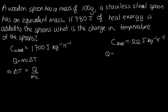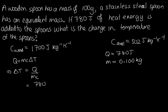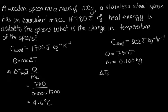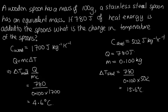In this question, we're told that the heat added, q, is equal to 780 joules, and the mass of the spoons is 100 grams, which is 0.100 kilograms. So the change in temperature is 780 over 0.100 times — for the wooden spoon — 1,700. Solving this on the calculator, we get 4.6 degrees C. The change in temperature of the steel spoon is 780 over 0.100 times 502, which gives us 15.6 degrees C. So the steel spoon has a much larger change in temperature than the wooden spoon, which is why it's a good idea to use wooden spoons to serve hot saucepans rather than steel spoons.